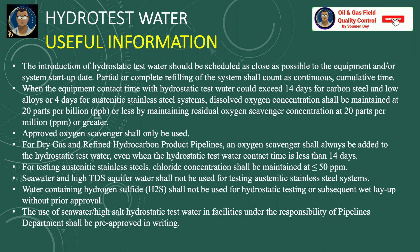For dry gas and refined hydrocarbon product pipelines, an oxygen scavenger shall always be added to the hydrotest water, even when hydrostatic test water contact time is less than 14 days. For testing austenitic stainless steels, chloride concentration shall be maintained less than 50 ppm. Seawater and high-TDS aquifer water shall not be used for testing austenitic stainless steel systems. Water containing hydrogen sulfide shall not be used for hydrostatic testing or subsequent wet layup without prior approval.